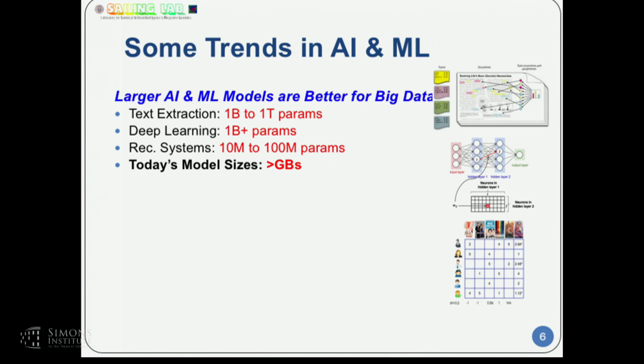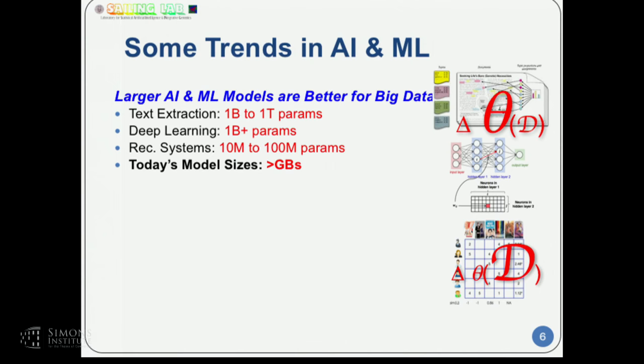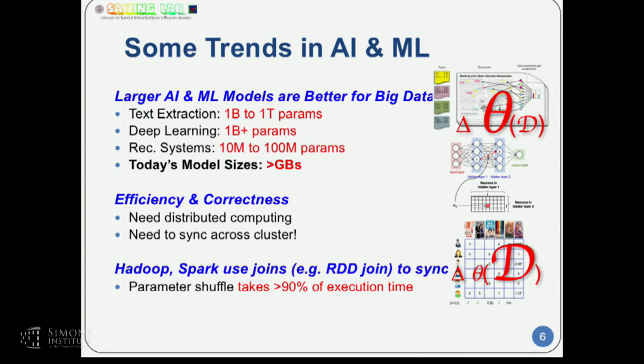In modern times, this iterative update step is under severe challenge because in many industry problems we face either very big data or big models. You may need to update a gigantic vector or matrix — say a hundred million parameters, not unusual in deep learning — or you might swipe through a terabyte of data every iteration. Doing this for an indefinite number of iterations is quite challenging, and you probably need to solve the problem not on one machine but on many machines in a distributed environment.